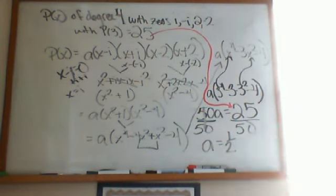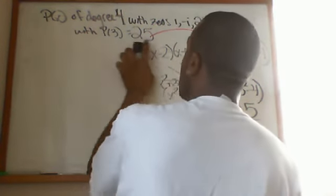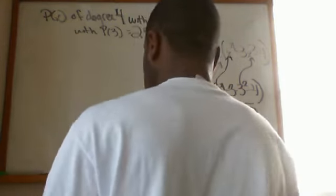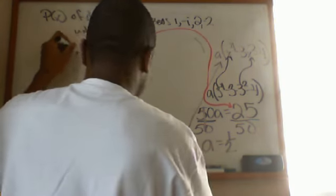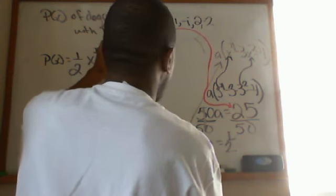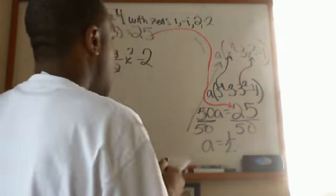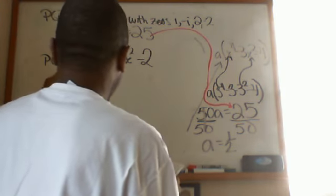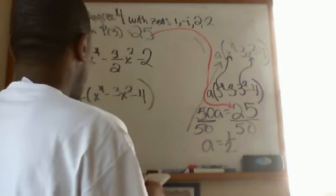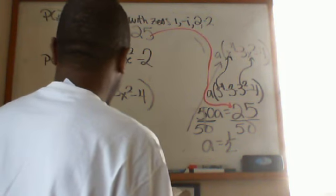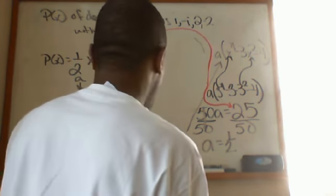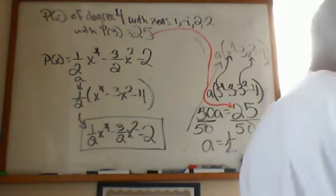The final polynomial is: p(x) equals one half times (x to the fourth minus 3x squared minus 4), which distributes to one half x to the fourth minus three halves x squared minus two. That is the final answer — the complete polynomial we were looking for.